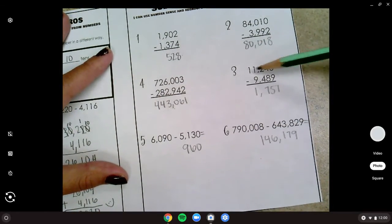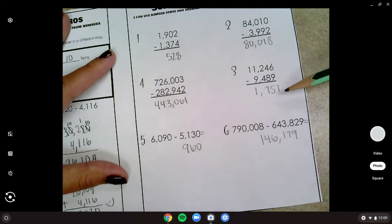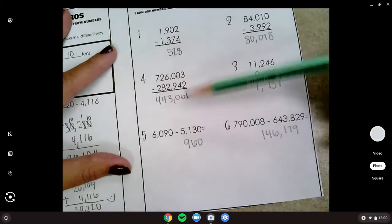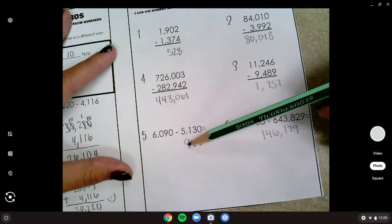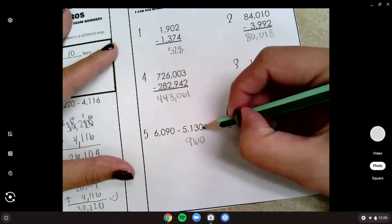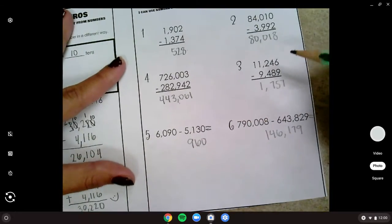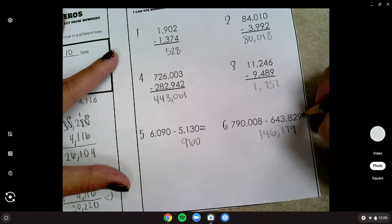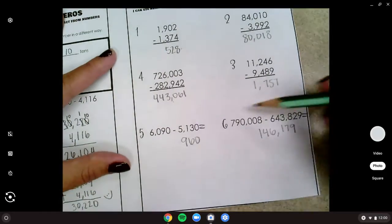Number four is 443,061. You needed to regroup a lot there. Two zeros in a row. Number three, it was just subtracting but you needed to borrow a lot, 1,757. Number five, you needed to stack up and you should have got a difference of 960. Notice I just put my equal sign at the end and wrote my answer down below because there wasn't a lot of room between them.